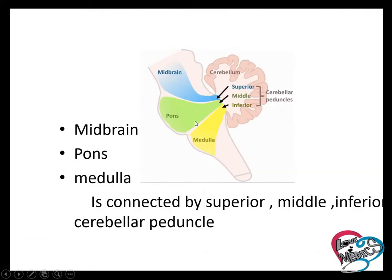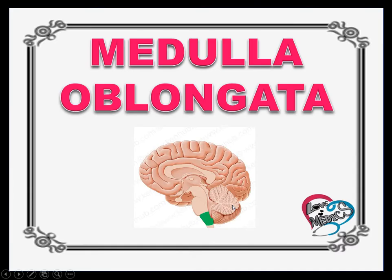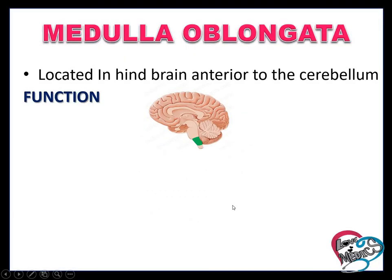The midbrain, pons, and medulla oblongata are connected by the superior, middle, and inferior cerebellar peduncles. The medulla oblongata is located in the hindbrain and anterior to the cerebellum.